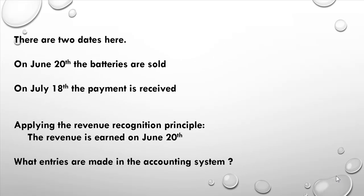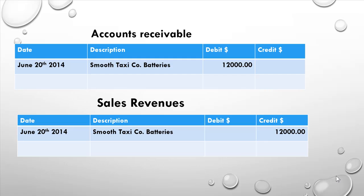We've got two dates: on June the 20th the batteries are sold, and on July the 18th the payment is received. Applying the revenue recognition principle, the revenue was earned at the point the batteries are sold and passed to the customer, which is June the 20th. So on June the 20th we debit accounts receivable and credit the sales revenues account.